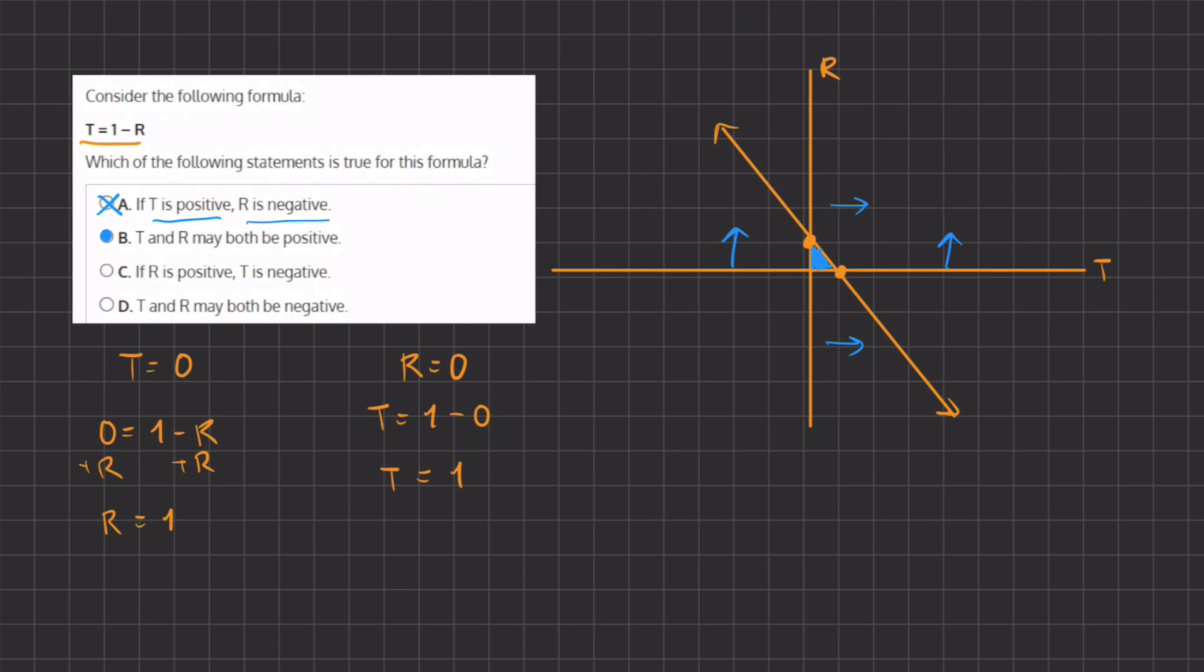Now we'll quickly see why c and d are incorrect. c states that if r is positive, so that is these arrows going up, then t is negative. Well, t seems to be also in the negative and also in the positive area. And therefore, c is also partially correct and will be eliminated.